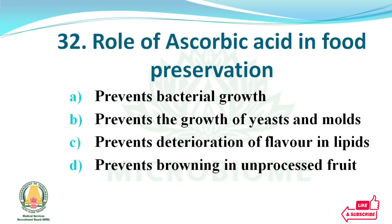The role of ascorbic acid in food preservation — options: prevents bacterial growth; prevents growth of yeast and mold; prevents deterioration of flavor in lipids; prevents browning in unprocessed fruit. The right answer: option D, prevents browning in unprocessed fruit.